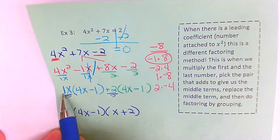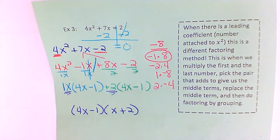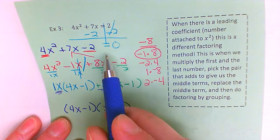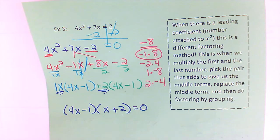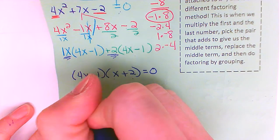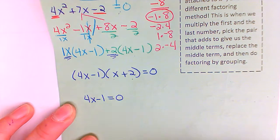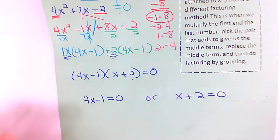I dropped the one because one x is the same as a regular x, but if you want to leave it there, that's fine. Don't forget — we factored this thing and it's still going to be equals zero. Now that I've got my two factors, I'm going to say four x minus one equals zero — that's my first set of parentheses — or x plus two equals zero.